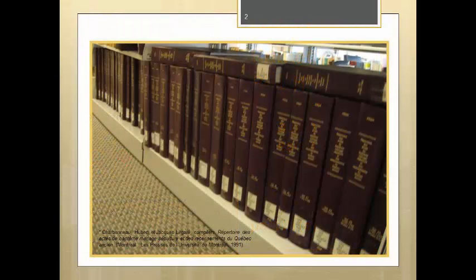In part one we compared the online version of the PRDH to these 47 printed volumes. We also explained how the volumes are grouped, which seems to be the main barrier to understanding and using this set of books. In part two we learned the meanings of the abbreviations used in these volumes, as well as how to use the general index and the parish indexes to find the records you're looking for. In part three we're going to learn how to read the three most common types of records used by French Canadian researchers: baptism, marriage, and burial records.